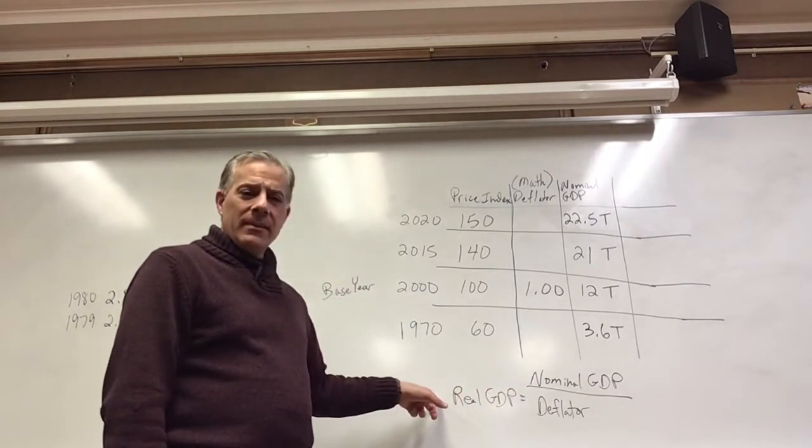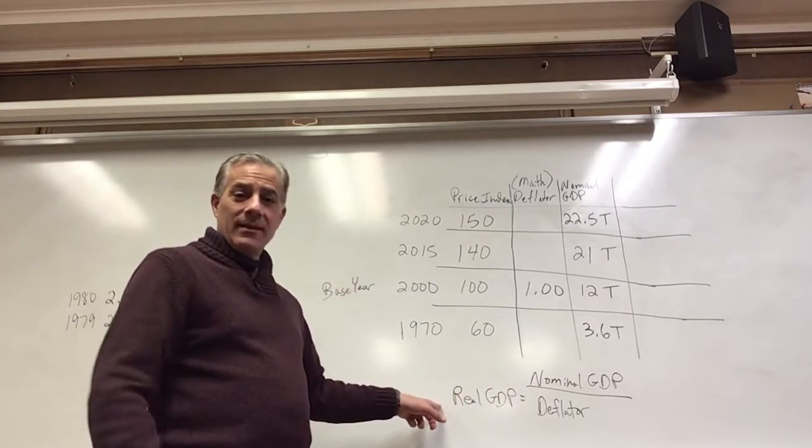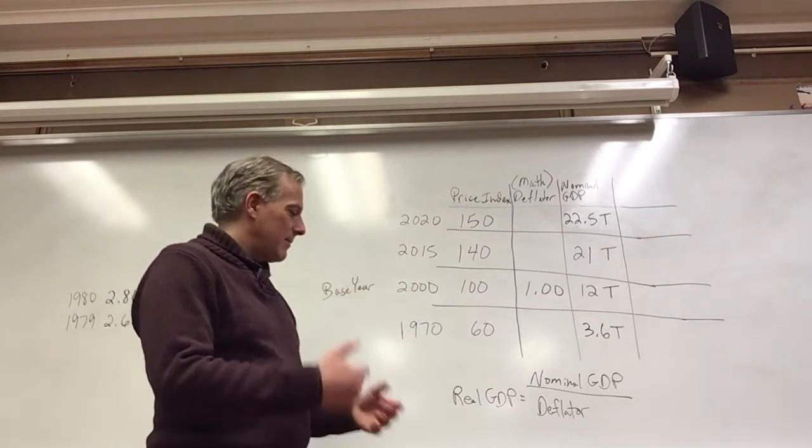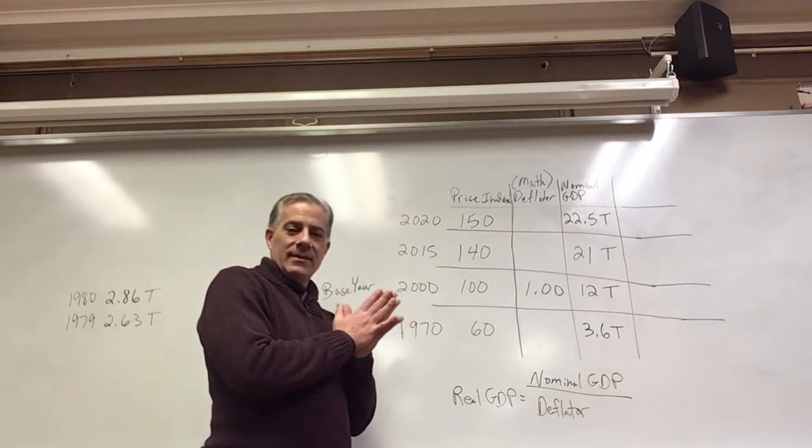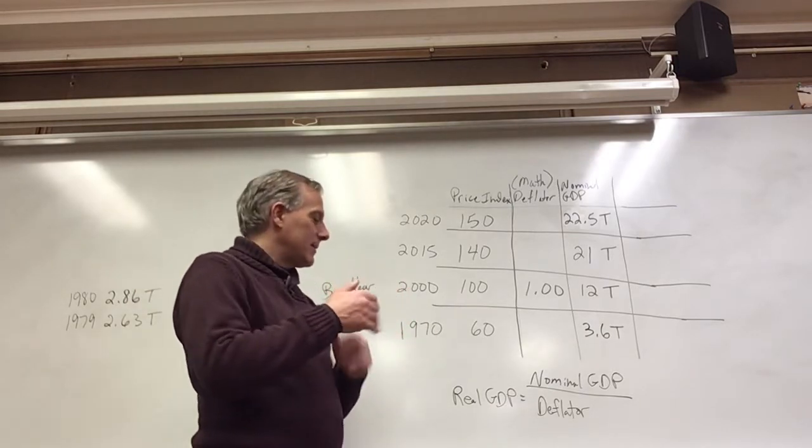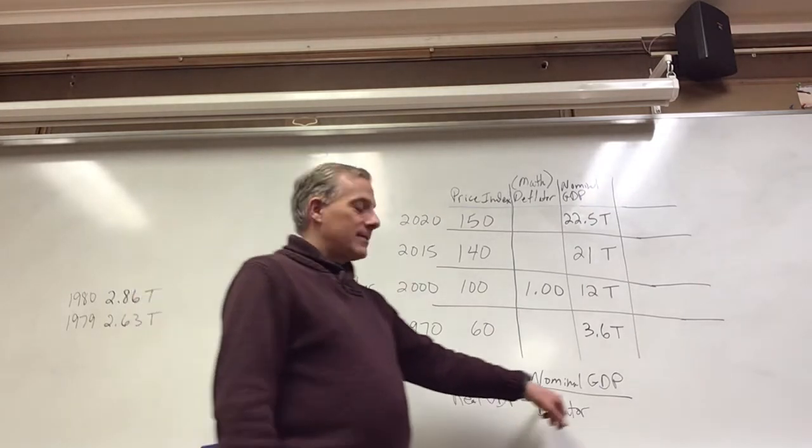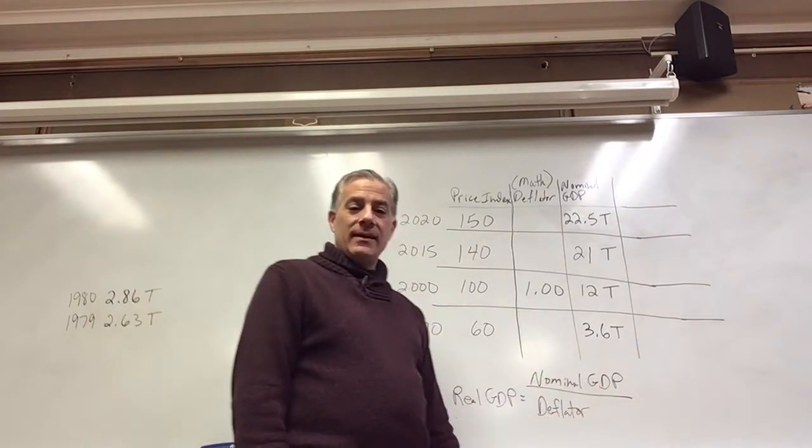So the main formula, this isn't just for GDP, it could be for wages, it could be calculating movie revenues, comparing Gone with the Wind to Sound of Music to Avatar to Avengers Endgame. And it's real GDP equals nominal GDP divided by the deflator.